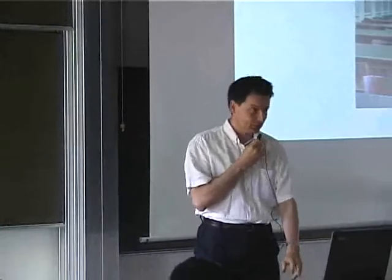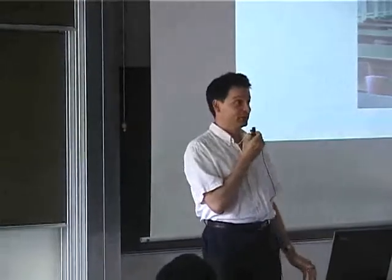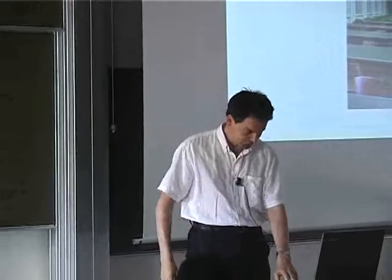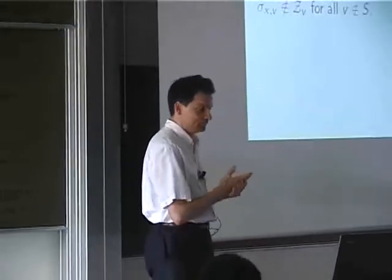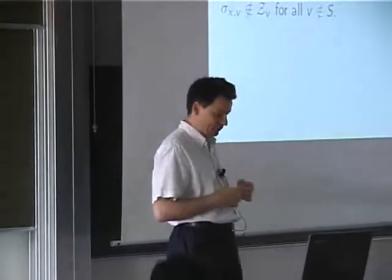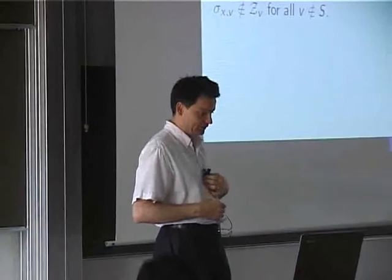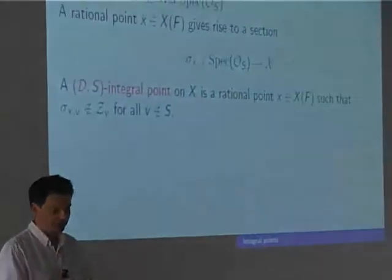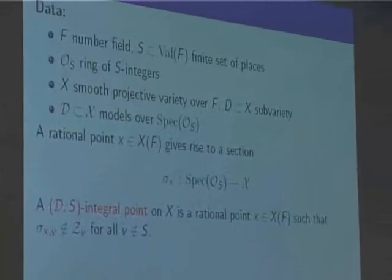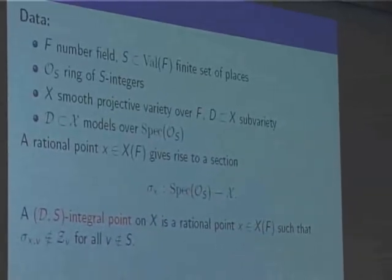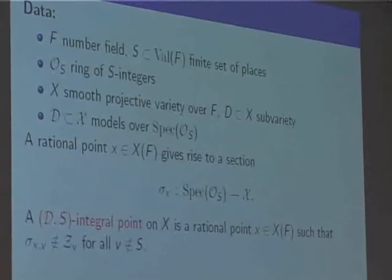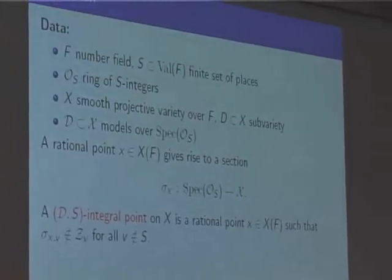Today we will discuss integral points and asymptotics of integral points. Some basic data: we have a number field F and a finite set of places S — including the archimedean ones — and the ring of S-integers. We have a smooth projective variety over our number field and a subvariety D.